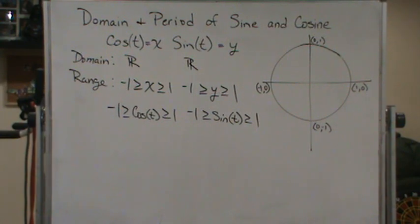So x and y have the same range, right? Cosine t and sine t have the same range.